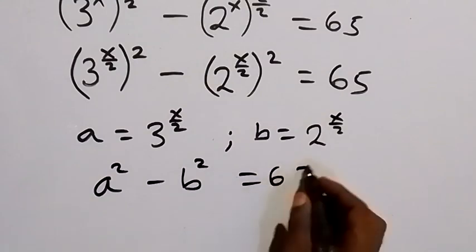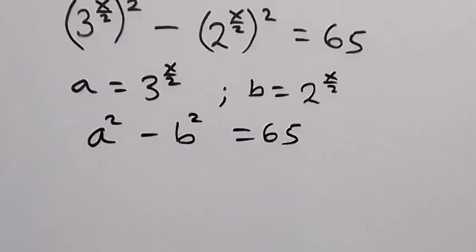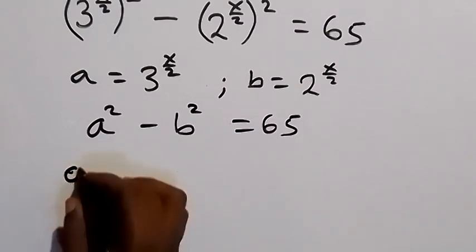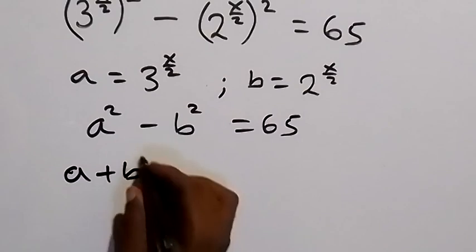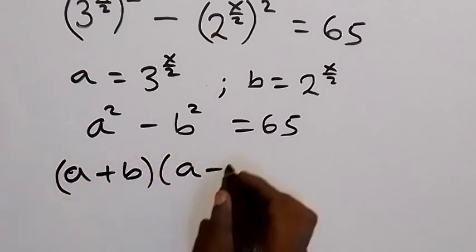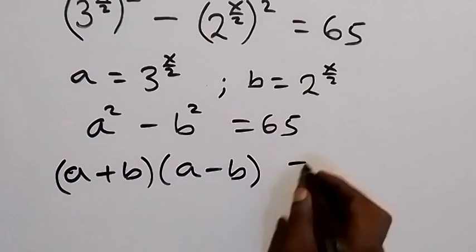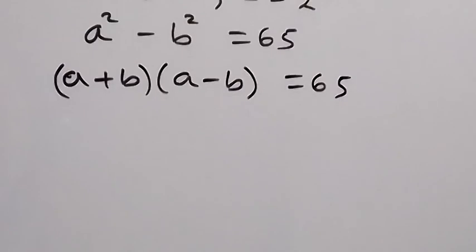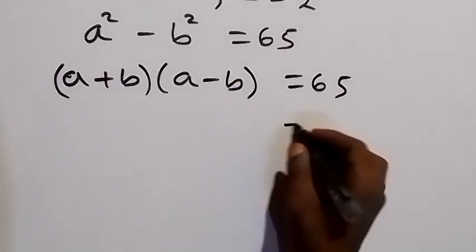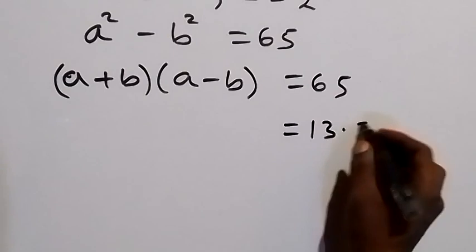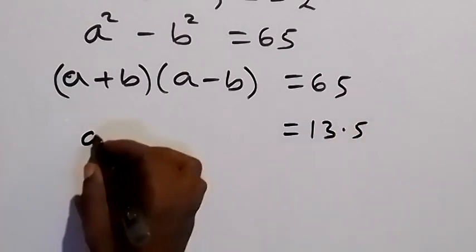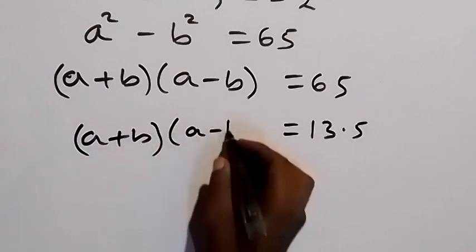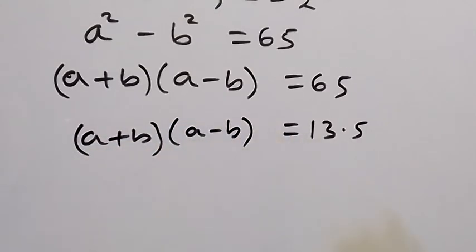We recognize this as the difference of two squares, so we factor it as (a + b)(a − b) = 65. We can write 65 as 13 times 5, so we have (a + b)(a − b) = 13 × 5.